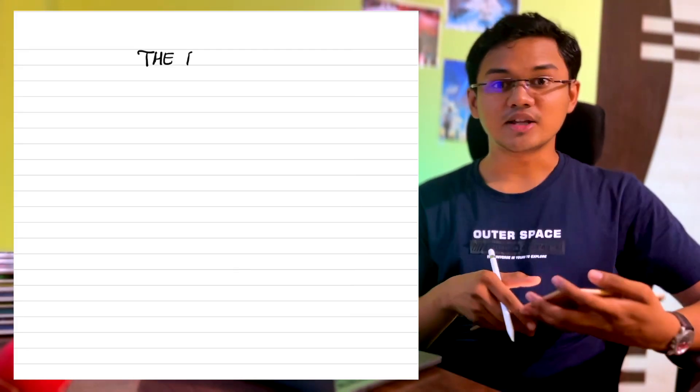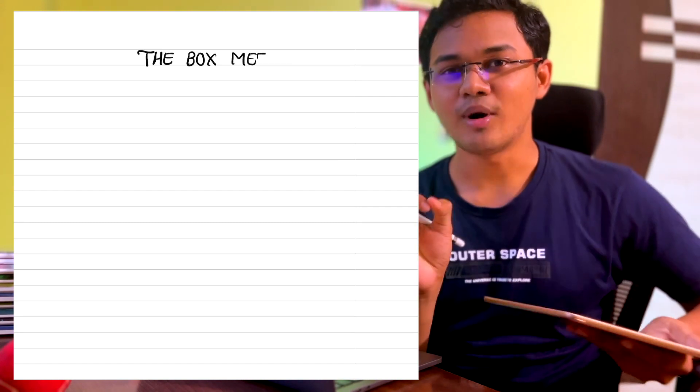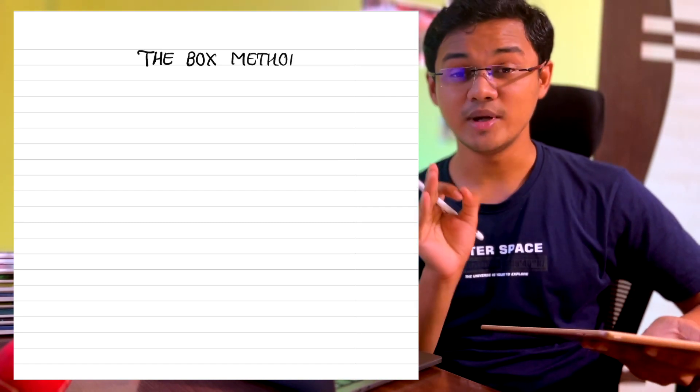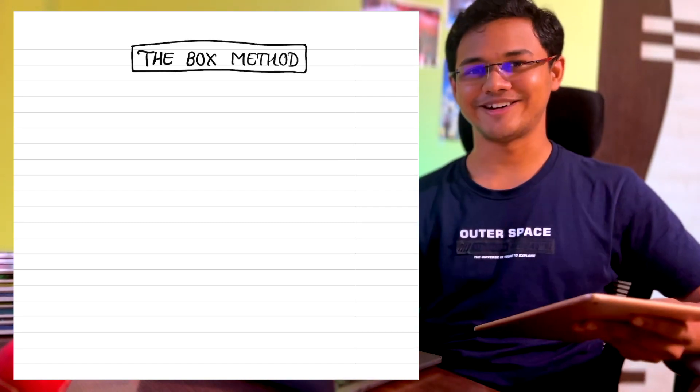Or go to the keywords and questions section and try to answer as many as you can. That's pretty much all about the Cornell method. The third method is called the box method, which is very suitable for iPad.